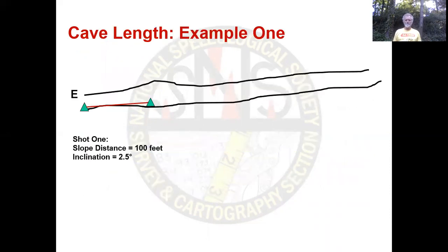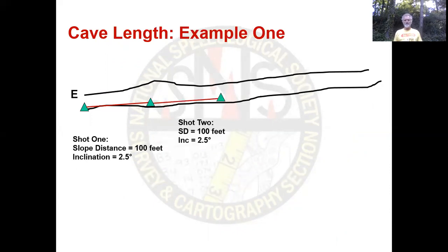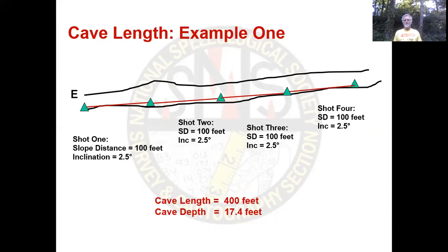Here is an example. Horizontal cave entrance on the left. I'm going to use the same shot over and over — a 100-foot shot at 2.5 degrees inclination. Shot one, shot two, shot three, shot four. All four shots have a slope distance of 100 feet, giving a cave length of 400 feet. Once you do the trigonometry, the cave depth in this instance is 17.4 feet.